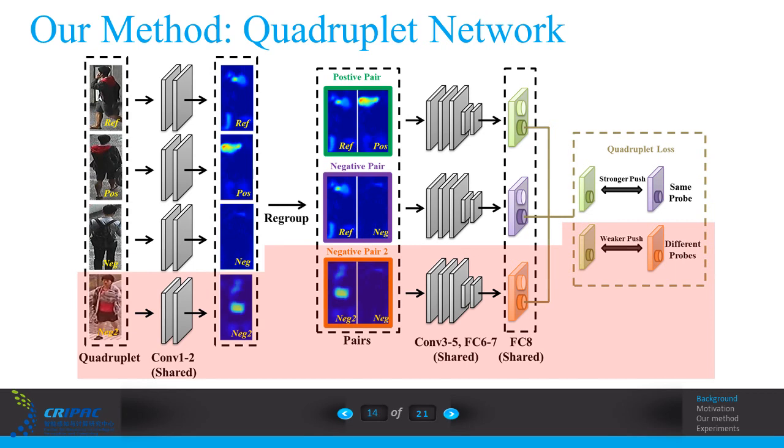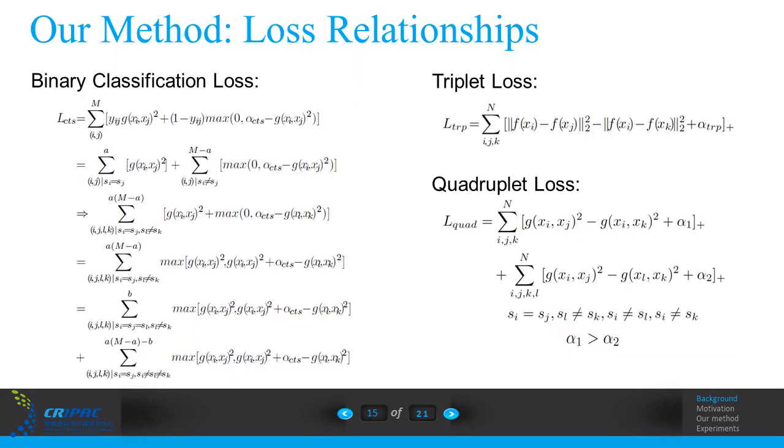Here is the quadruplet network. In the paper, we also discussed the relationship between the current binary classification loss, the triplet loss, and our quadruplet loss in theory.